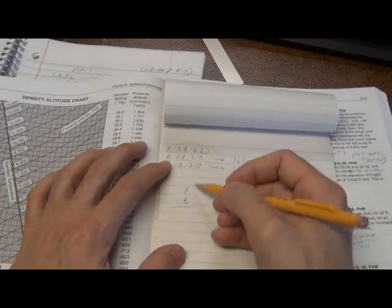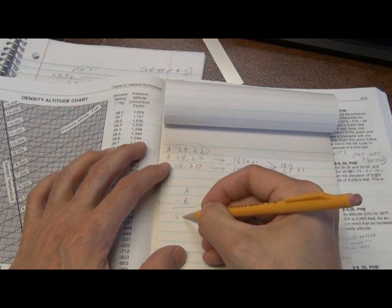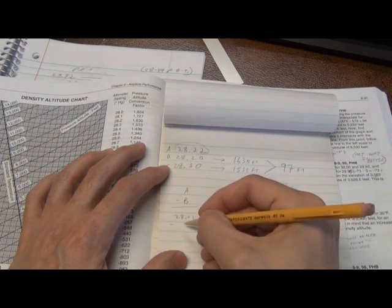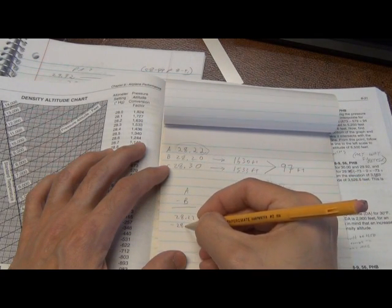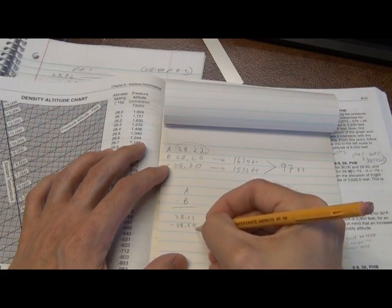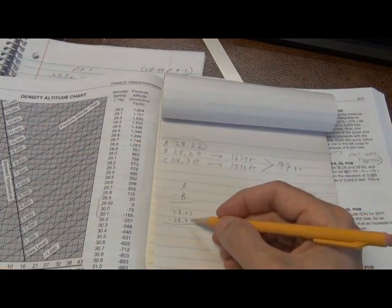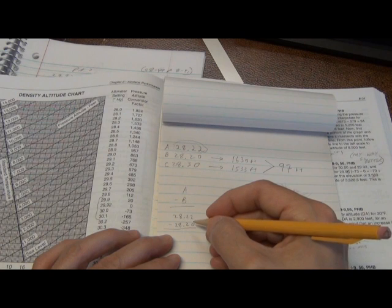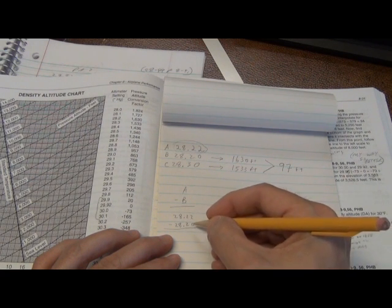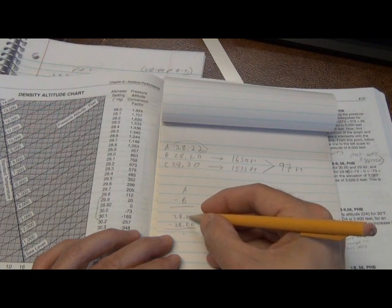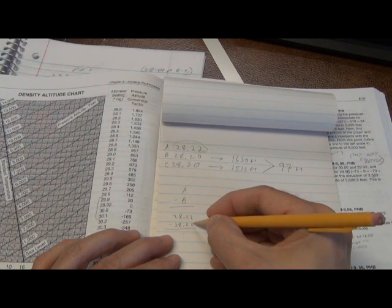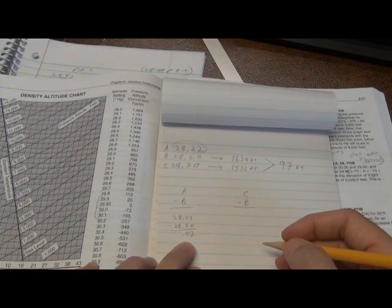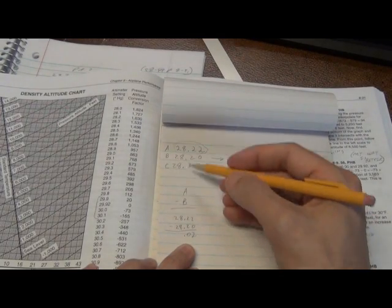So what do I mean by A minus B? Well, here's A, 28.22 minus B, which is 28.20. Now, even though we all know we can do this by hand, I'm going to do it by hand now, do not do these by hand when you're on the test because there's too much room for error, especially when you're dealing with decimals. But I know for sure that 28.22 minus 28.20 is definitely going to be 0.02. So 0.02 is the answer of the A minus B, this minus this.